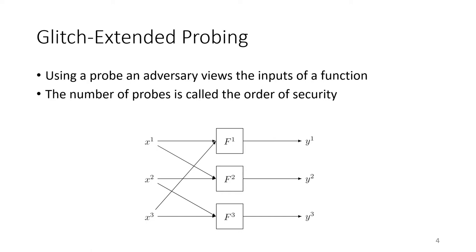In this work we look at the glitch-extended probing model. An adversary can pick a threshold number of masked functions to observe — in this example typically equal to two — and observing a function means observing all the inputs of that function. So this adversary can only view two masked functions of the entire masked cipher in total. This captures glitches since the input and output of each masked function in a threshold implementation is registered.